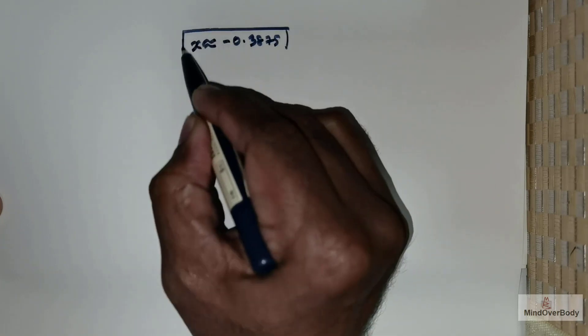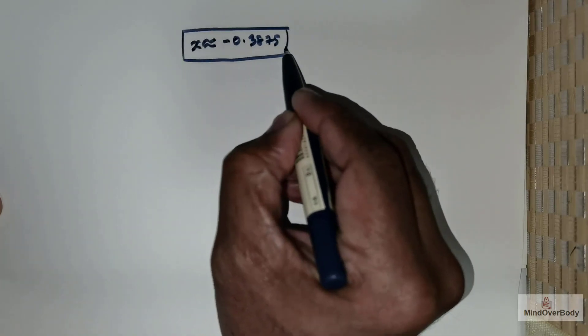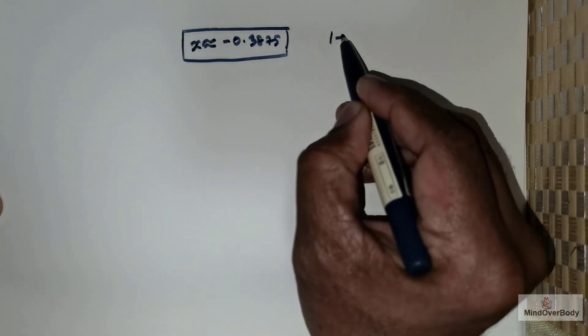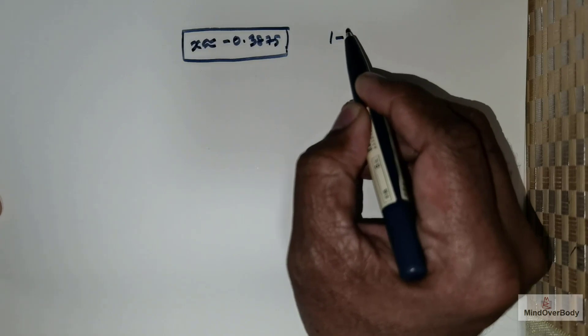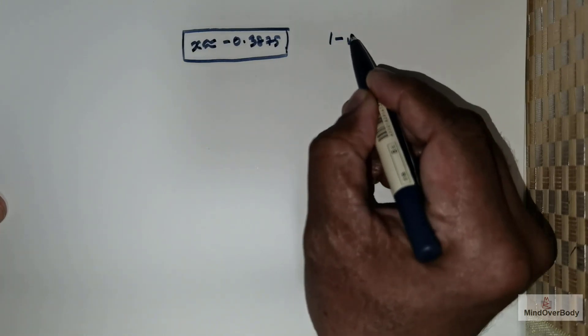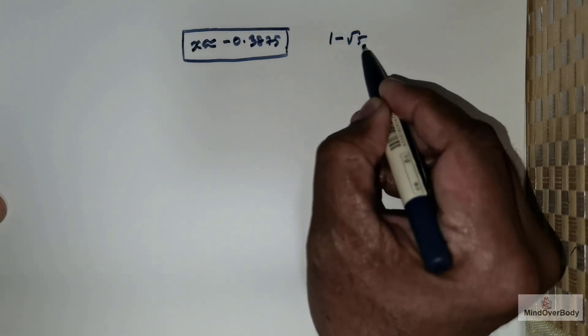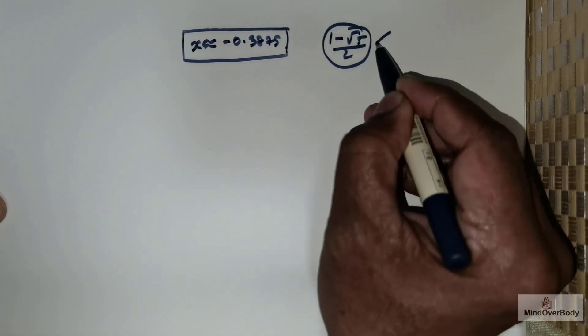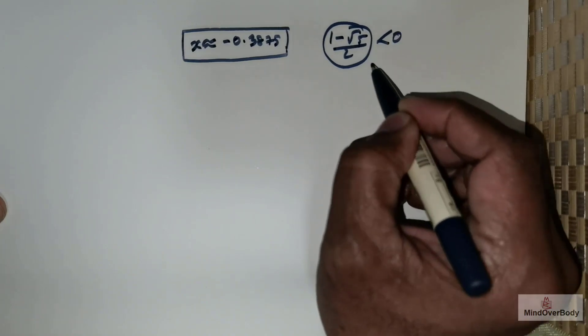So we conclude that x is approximately equal to negative 0.3875. We cannot use the solution 1 minus root 5 over 2 because that gives a negative value, which is not valid here.